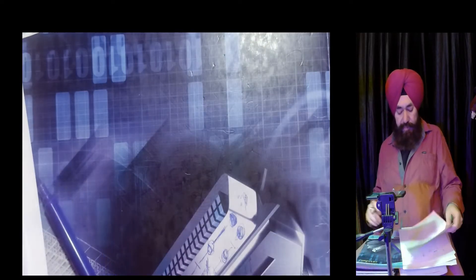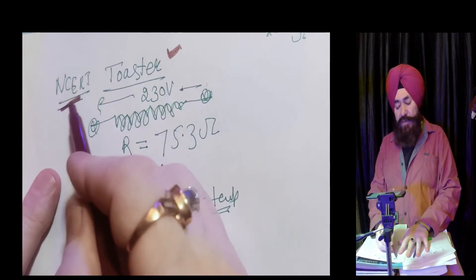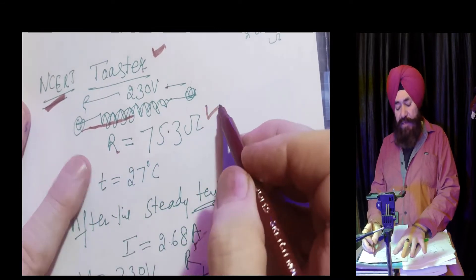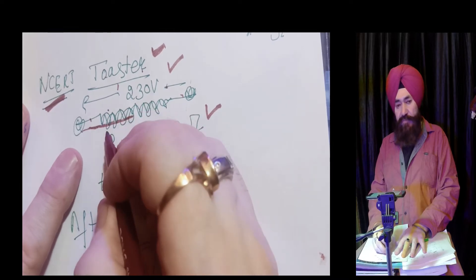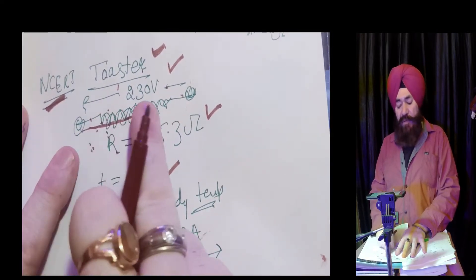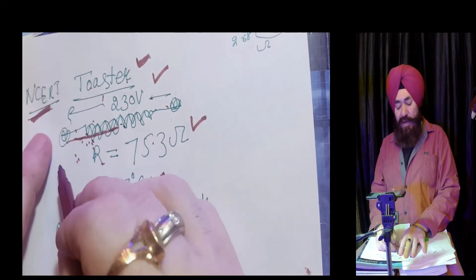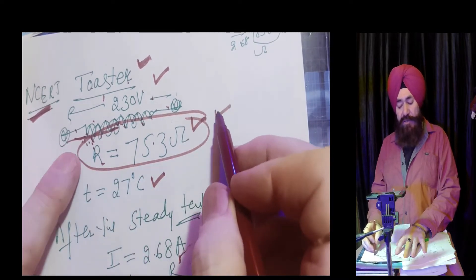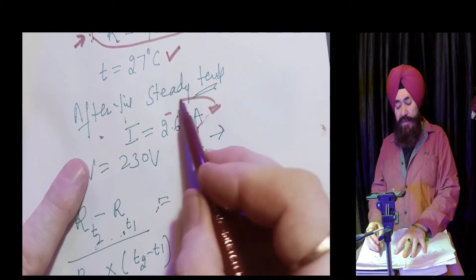Now there is a toaster — this is an NCERT question. In the toaster there is a filament, and the resistance of the filament is given. The room temperature is given and voltage applied is 230 volt. When you switch on the toaster, after a few minutes a steady state is reached — the temperature becomes constant. If there is a change in temperature of the filament, definitely there will be a change in resistance.